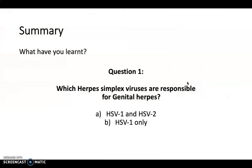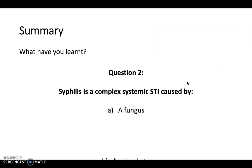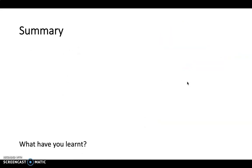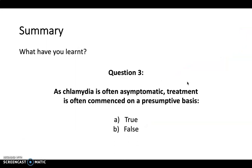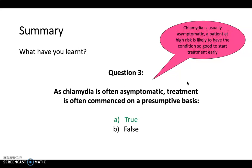To finish, let's recap: for genital herpes, HSV1 and HSV2 are both responsible. Syphilis is a complex systemic STI caused by a spirochete. And chlamydia is often asymptomatic, so treatment is commenced on a presumptive basis. I hope you found this tour of STIs useful — it was just a brief overview, and we'll be covering them in more detail elsewhere. Thank you very much for listening, and please get in touch if you have any questions.